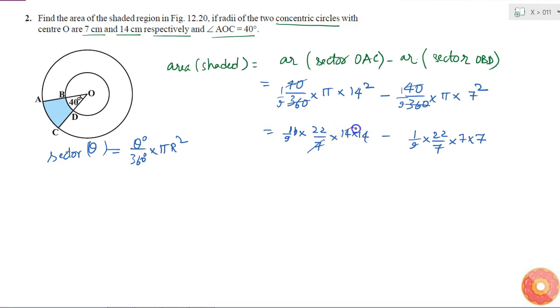I know 7 2's are 14, so this will cancel here, and here I will cancel 7 and 7. I will get 22 into 2 into 14 by 9 minus 22 into 7 by 9. If I take out 22 by 9 common, what will I get? This is 2 into 14, which is 28 minus 7, which is same as 22 by 9 into 21.